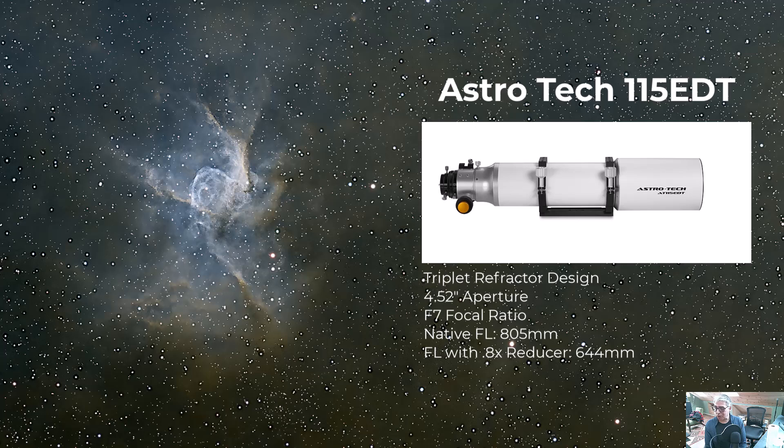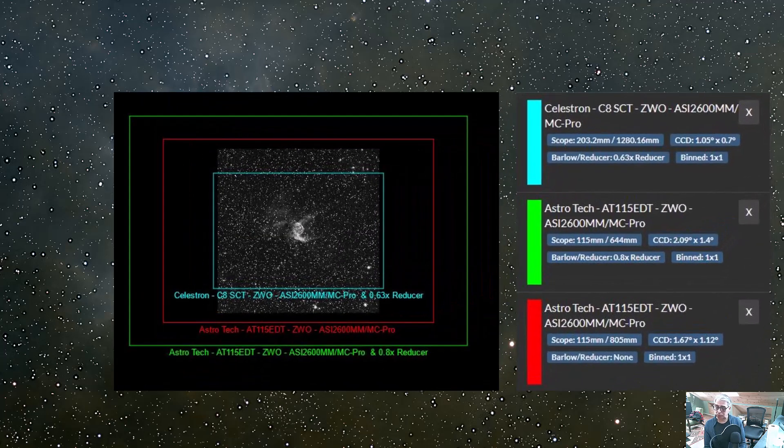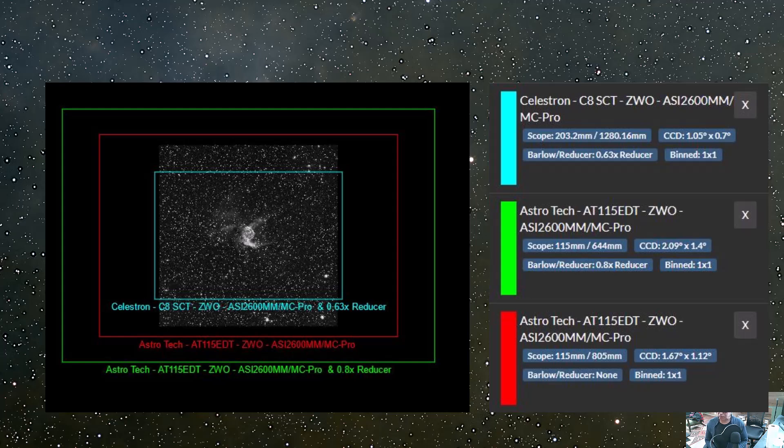And I wouldn't go any wider field than that with respect to this image of Thor's Helmet Nebula. In fact, if anything, I would probably go longer, maybe even consider knocking off the reducer just to get a little bit closer in on this target.